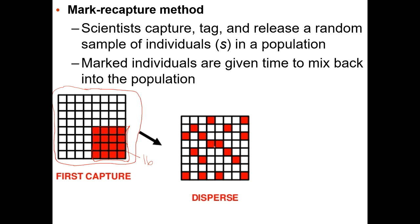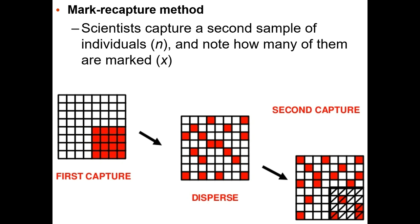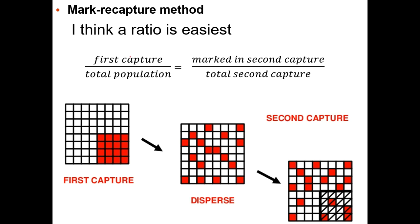We come back later and do a second capture. The entire population is out there, but we capture a second group of 16 organisms. In that second capture, four of them had previously been marked. So: first capture = 16, total population = N (unknown), marked in second capture = 4, total second capture = 16.